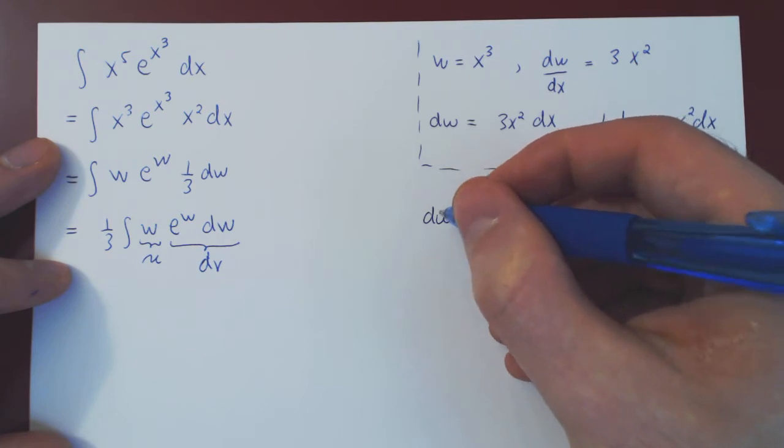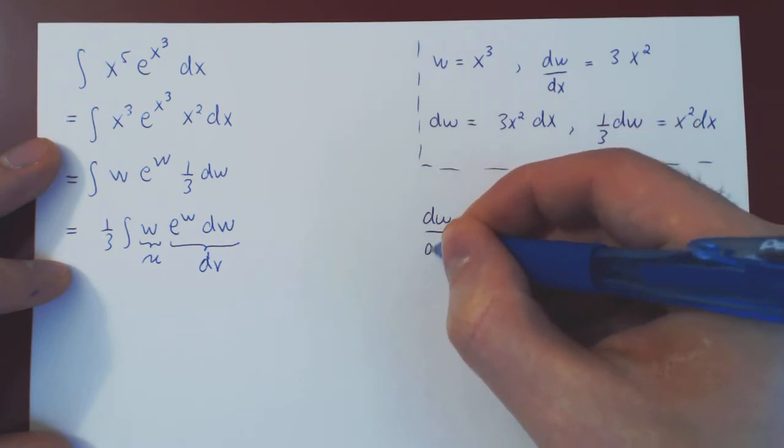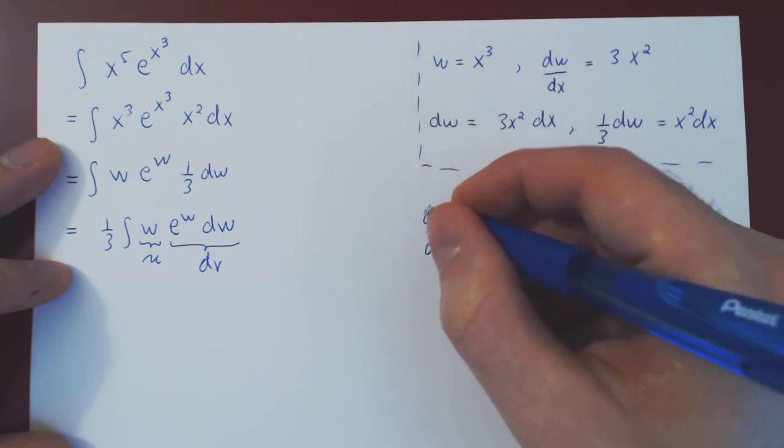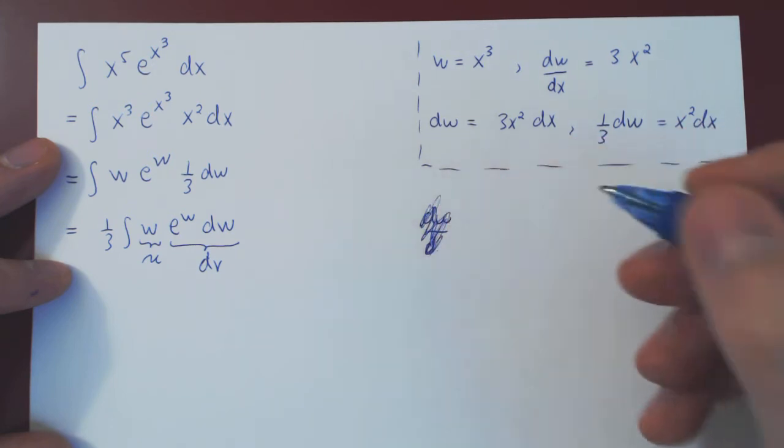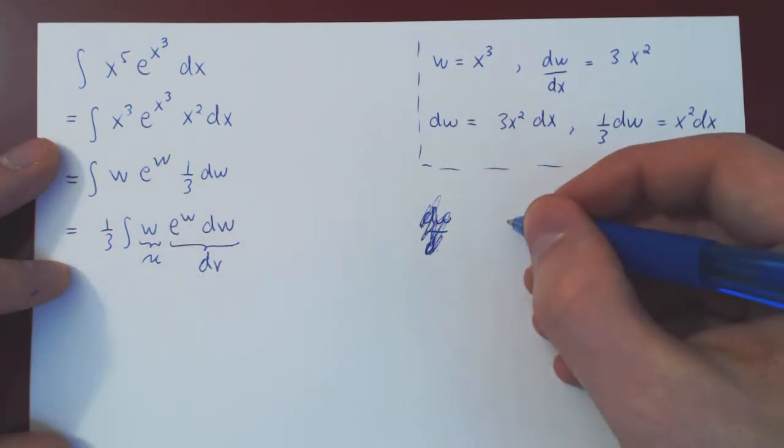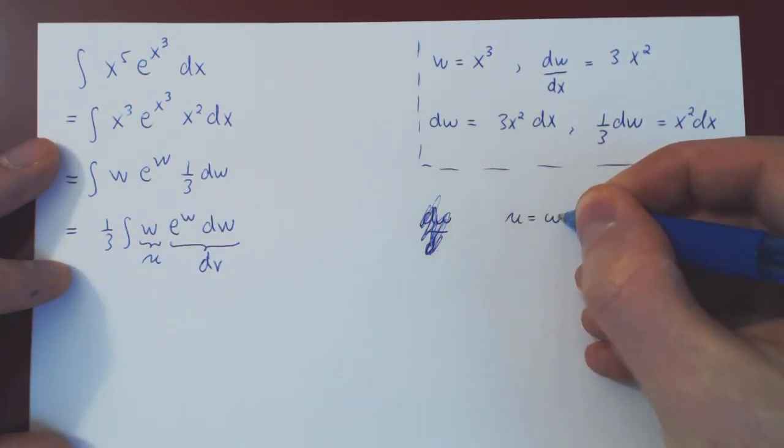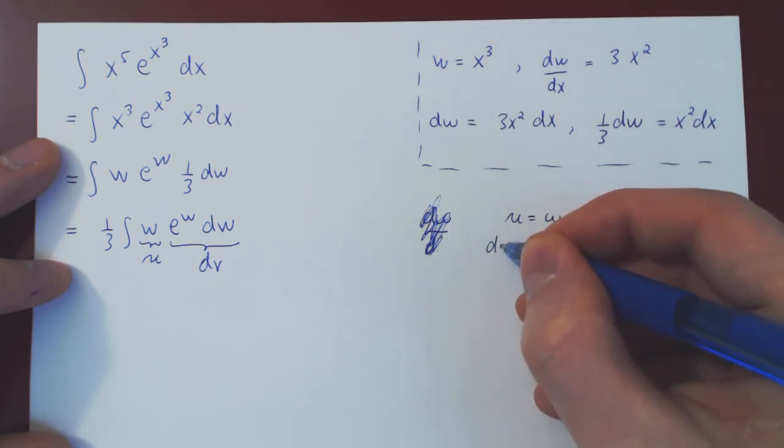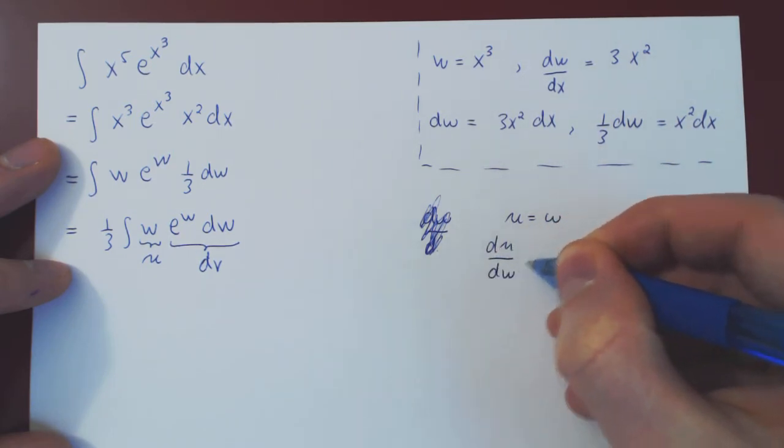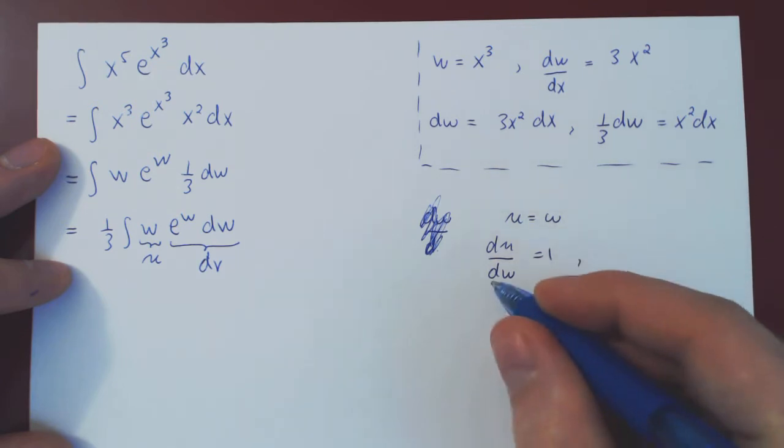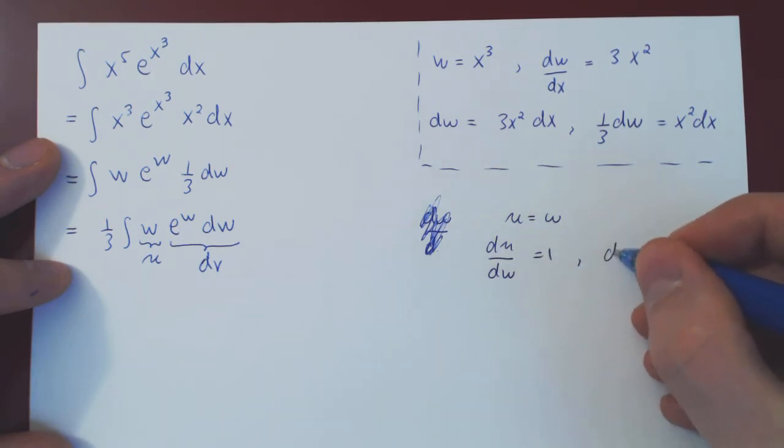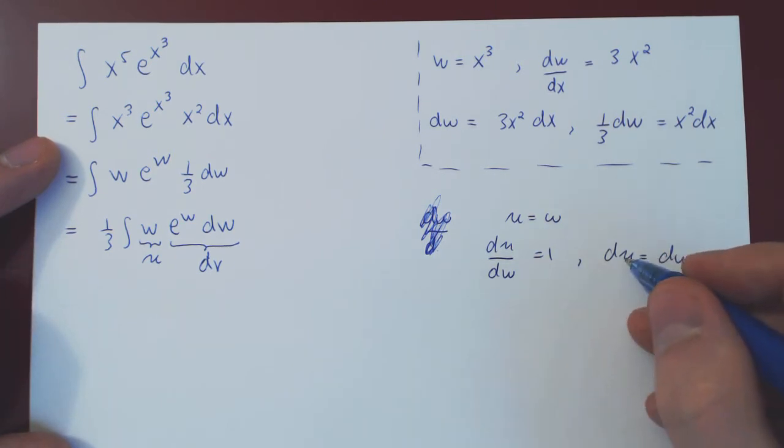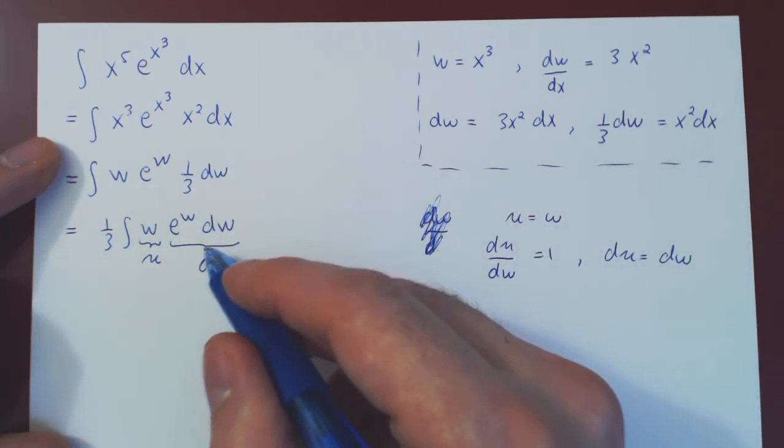So, we need our du. Differentiate w with respect to u. Oh, sorry. U is w. So, if you differentiate u with respect to w, of course, you get 1. Multiply by dw, and du is dw. So, we have our du. Now, we're missing, of course, our v.